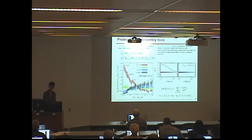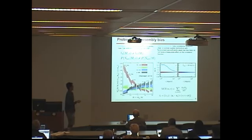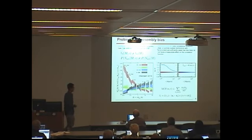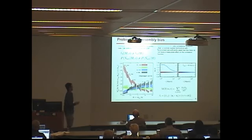The last topic is halo assembly bias. Risa's paper and others predict that halos cluster differently as a function of halo mass and also concentration — basically, paired halos usually have higher concentration, and higher concentration halos are more clustered. Since we know subhalo occupation also correlates with concentration, the question is: can we use subhalo occupation as a proxy to probe halo assembly bias? Zentner et al. argue this is not possible because any correlation with concentration is too weak to appear in the clustering signal.